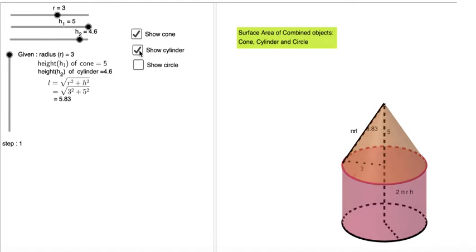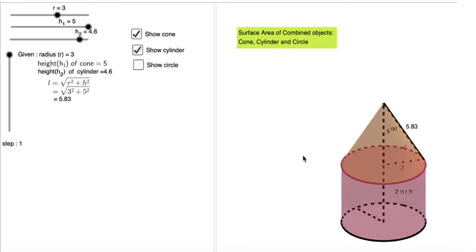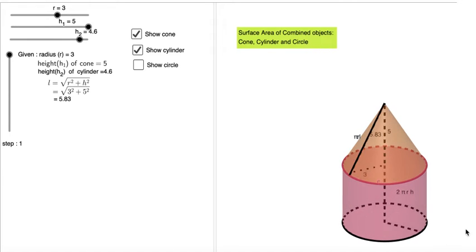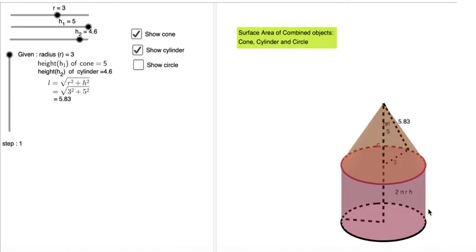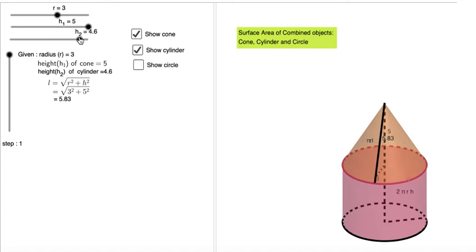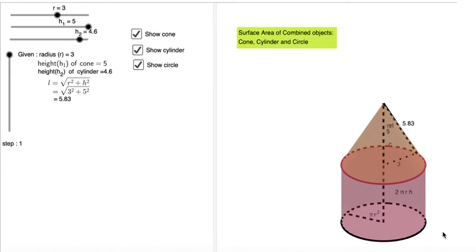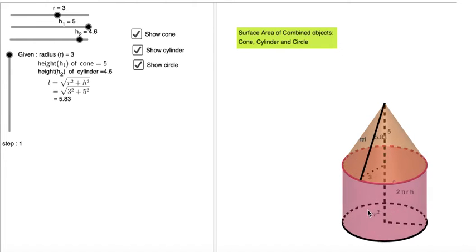Now show the cylinder. So cylinder surface area is 2 pi rh, where h2 is the height of the cylinder. Now show the circle. Circle is at the bottom of the cylinder.